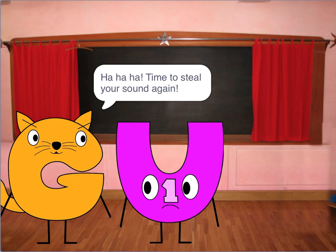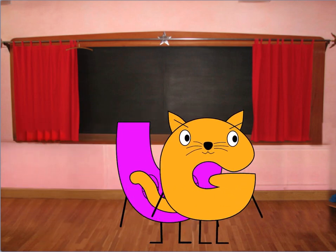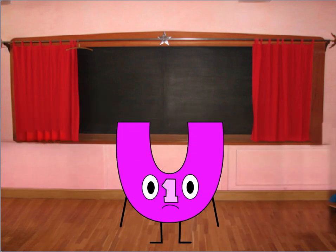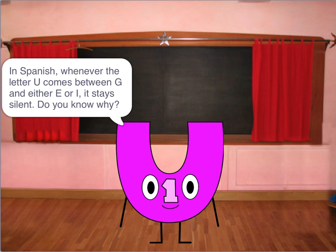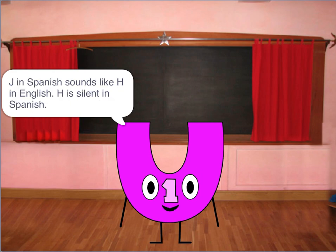Time to steal your sound again. In Spanish, whenever the letter U comes between G and either E or I, it stays silent. Do you know why? Without it, the G would make its soft sound, which sounds like H in Spanish — because G before E or I in Spanish sounds like H in English.